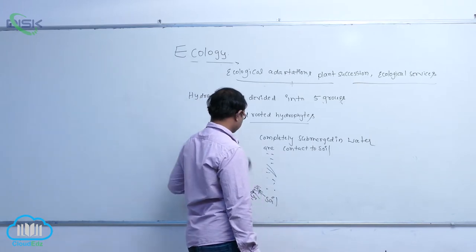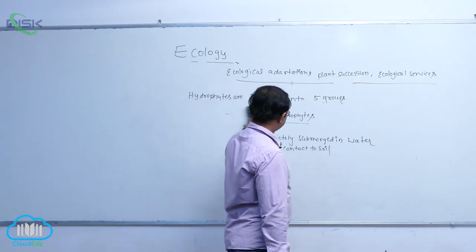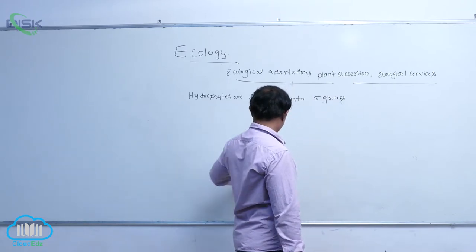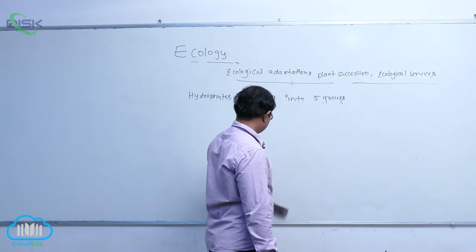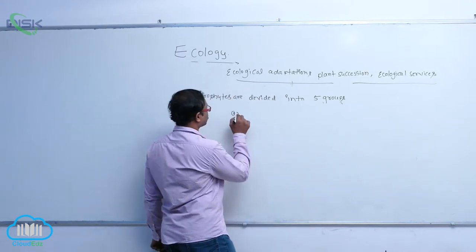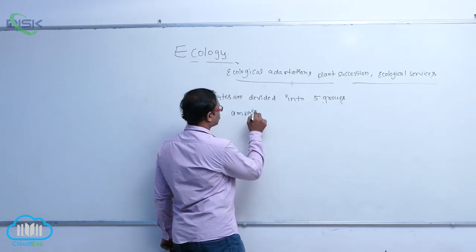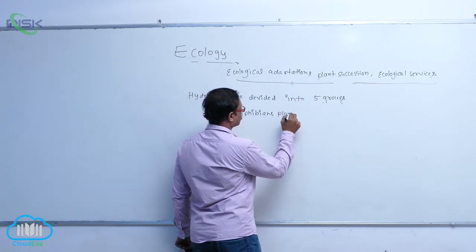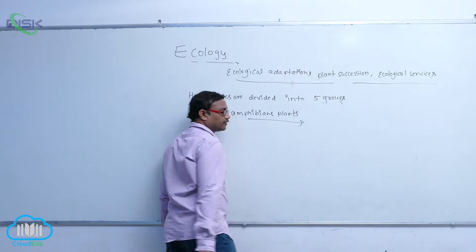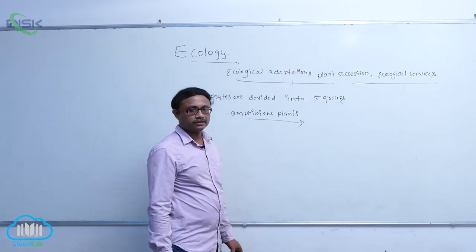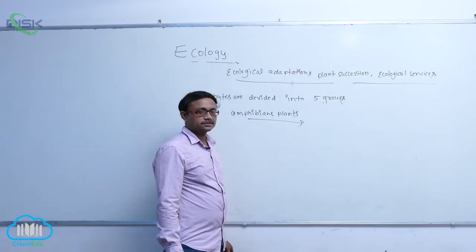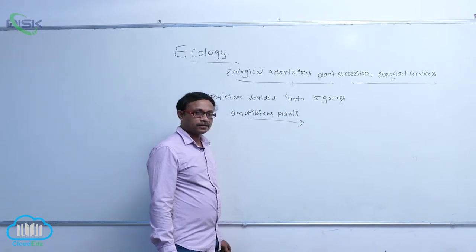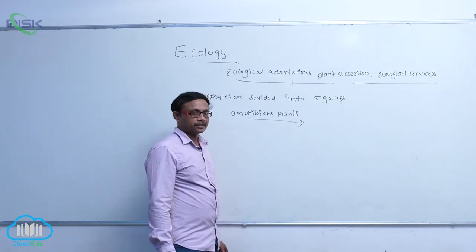After that, amphibious plants. So, amphibious plants means, what is the meaning? So, which plants are related to that water and air or soil.